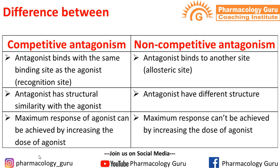The first difference: in competitive antagonism, the agonist and antagonist bind with the same site, which is why there is competition. This binding site is known as the recognition site. In non-competitive antagonism, the agonist and antagonist bind with different sites — the antagonist binds with the allosteric site. The recognition site is the main site where the agonist binds and produces a response.